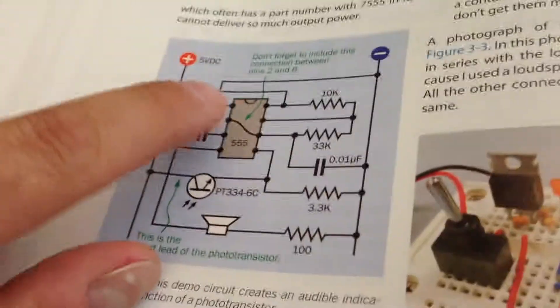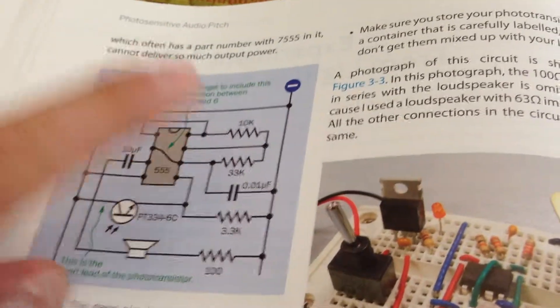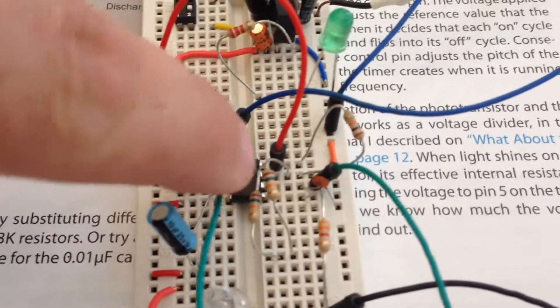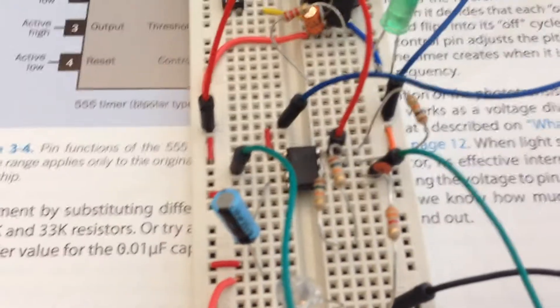One thing I should point out, the 33K resistor, I did not have a 33K, but I did have two 15Ks. So I used those. I just ran one out and then put another one in series with it. So it's 30K, close enough.